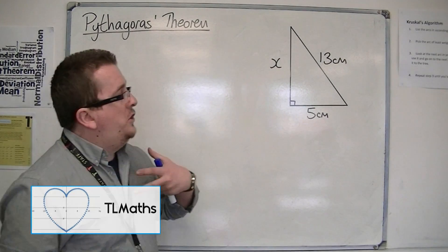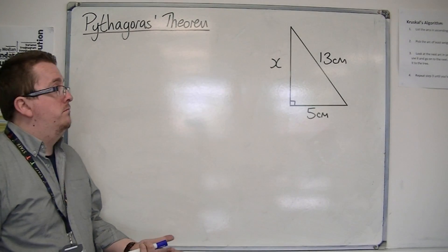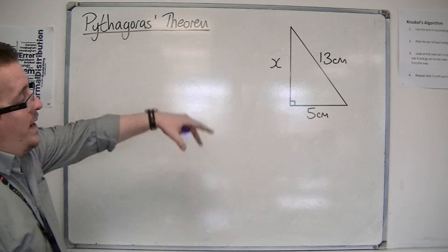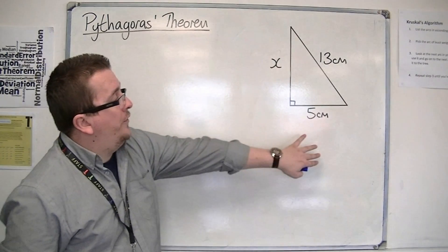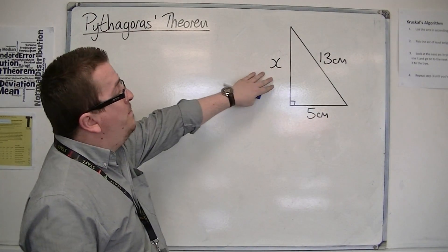Okay, so this looks like a regular Pythagoras theorem question. What we have is a right-angled triangle. We've got two lengths already given to us. We've got the 5 centimeters, we've got 13 centimeters, we've got a missing side.